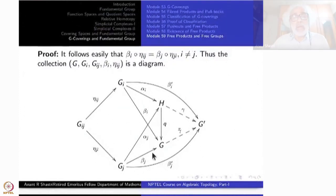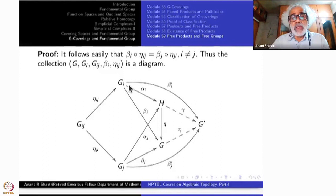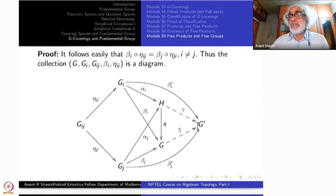This is the picture we have. H is the given free product ignoring the eta_ij's. H has the property that if you have G_i's and G_j's as monomorphisms, and if you have any G prime with beta_i primes, beta_ij primes, etc., there is a unique map gamma — that is the definition of H, the universal property of H. A similar property for G is what we want to prove.